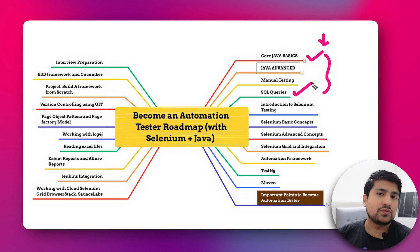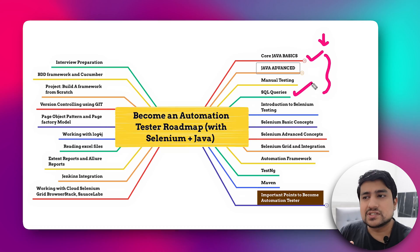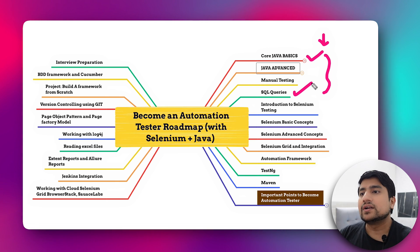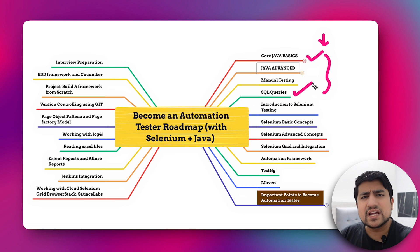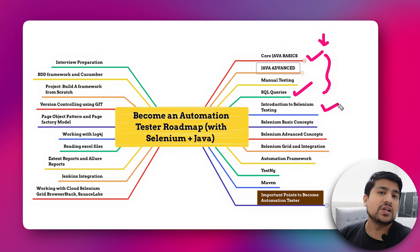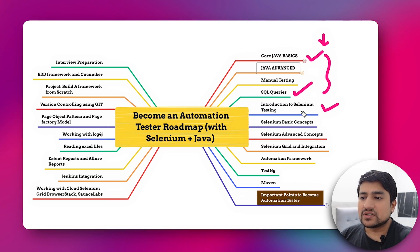After Core Java, you need some basics of SQL queries — not an advanced level, just the basics. Learn MySQL, which is widely used. Topics include different types of joins, SELECT, UPDATE, DELETE queries, and other fundamentals. SQL basics are required to become an automation tester because many times we have to use them. After that comes the important part: introduction to Selenium, which is the most widely used tool for UI automation.